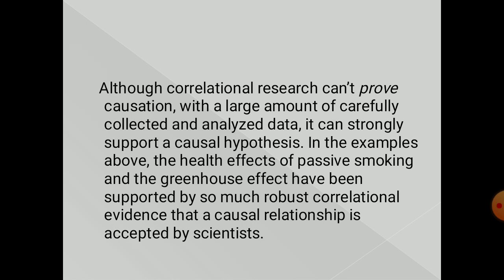That's all for today about correlational studies. To summarize: there are three types of correlation — positive correlation, negative correlation, and zero correlation. There are also three types of data collection in correlational studies: surveys, naturalistic observation, and archival data. Finally, causation is not always the same as correlation — you have to verify whether a causal relationship truly exists between the two variables.